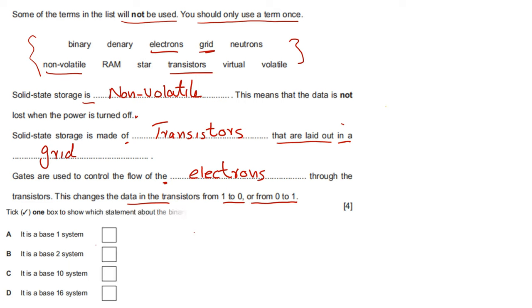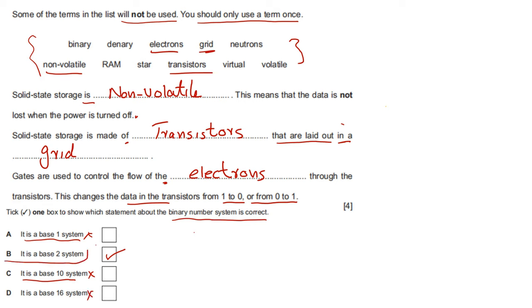Tick one box to show which statement about the binary number system is correct. It is a base 1 number system — incorrect. It is a base 2 number system — yes, this statement is correct. It is a base 10 number system — incorrect. It is a base 16 number system — also incorrect. The correct option is B.